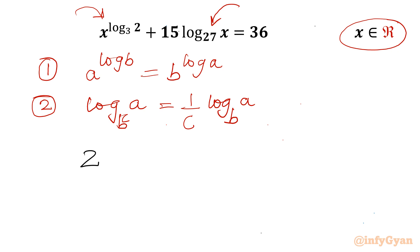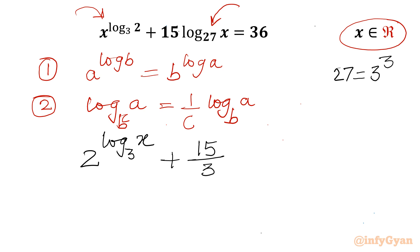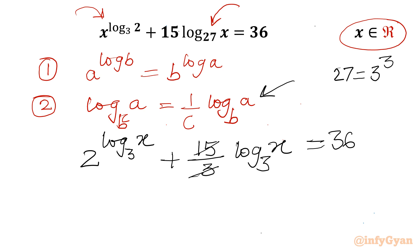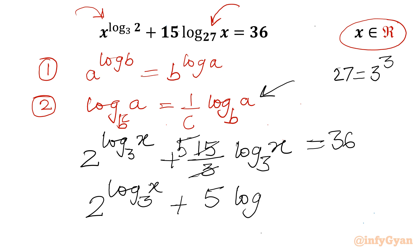Applying these properties, I first write 2 power log x with base 3, plus 15. Now we know that 27 is 3 power 3, so that 3 will come here using property number 2, and we can write log x with base 3, equal to 36. Now we can cancel 15 over 3 as 5, giving us 2 power log x base 3, plus 5 times log x base 3, equal to 36.